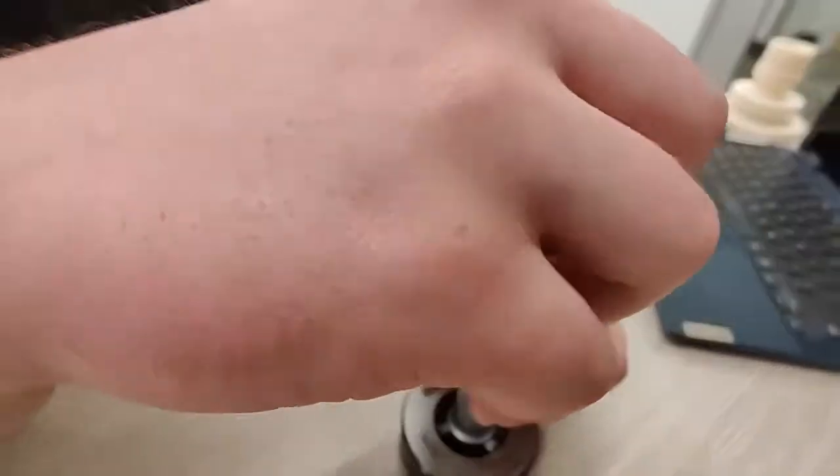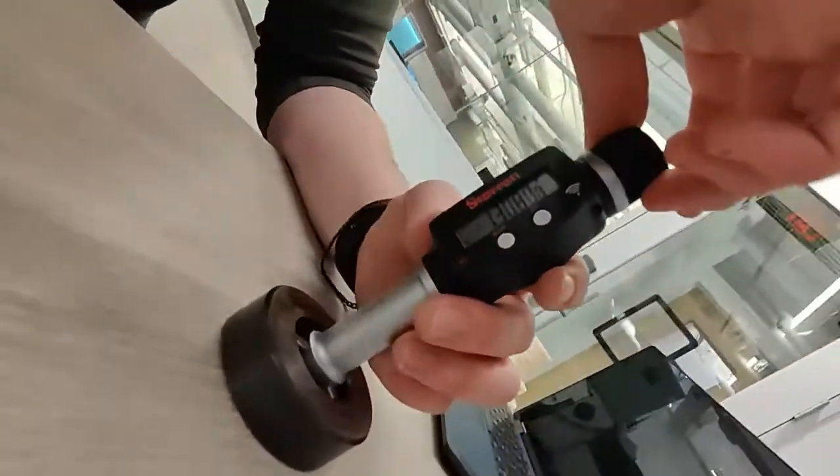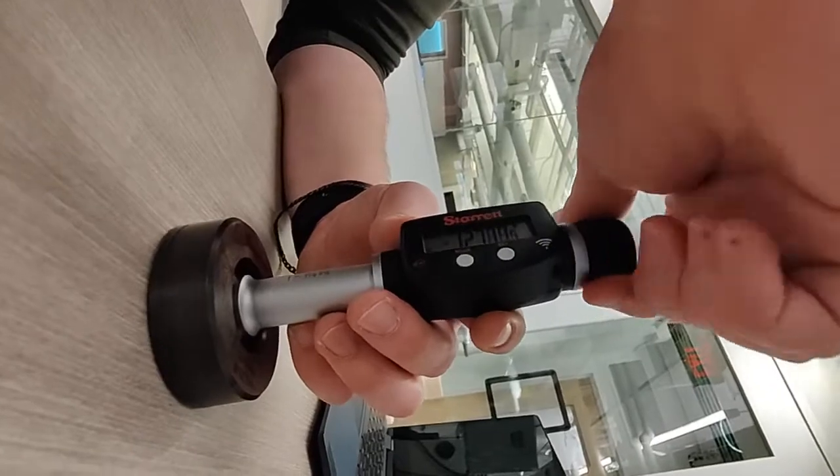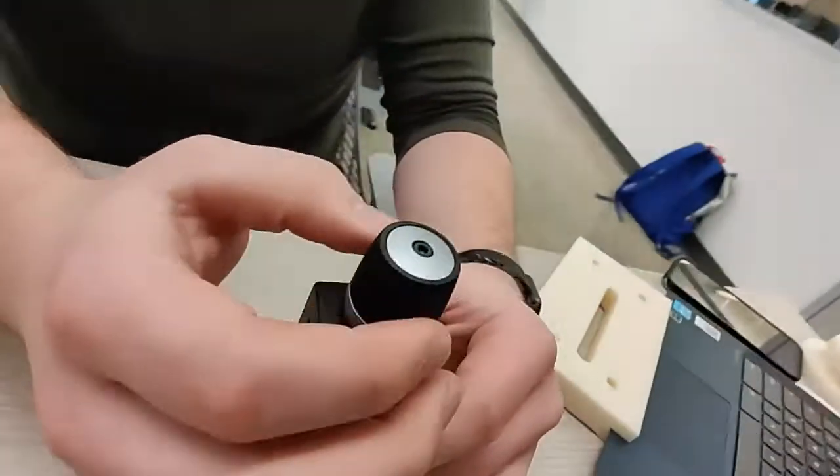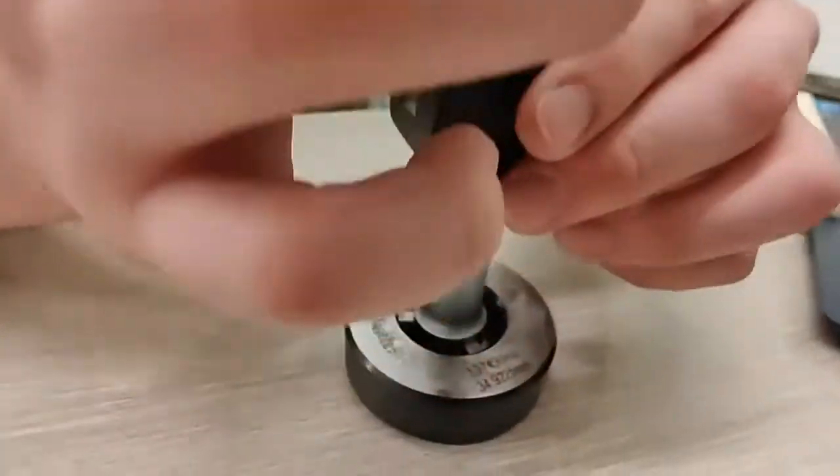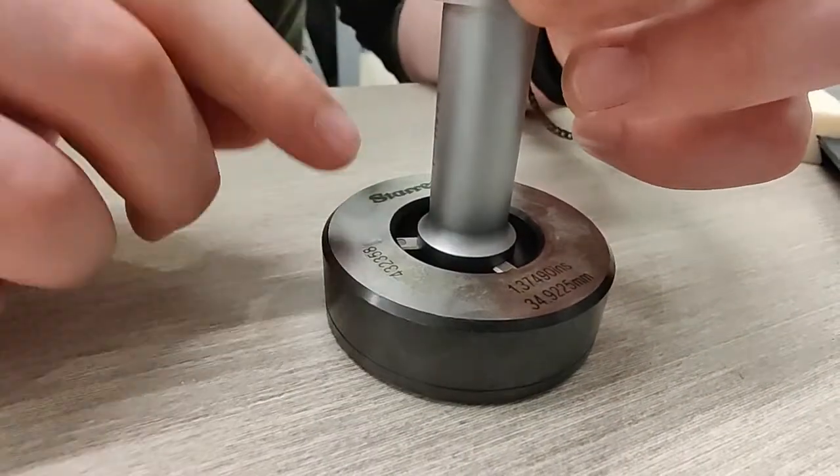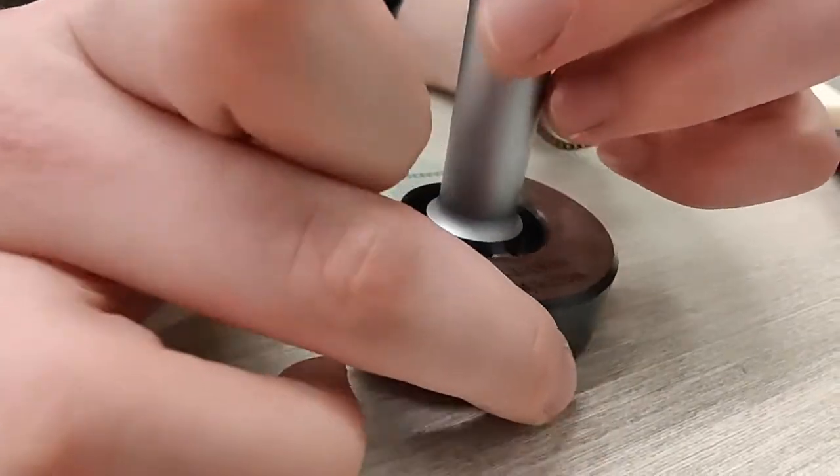We're going to insert the bore mic into the ring gauge and rotate the spindle clockwise until the ratchet clicks so we don't put excess pressure on the surface.